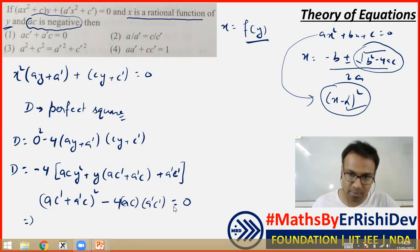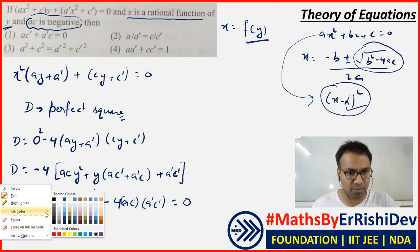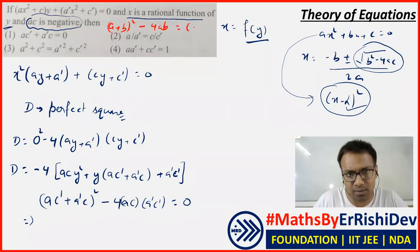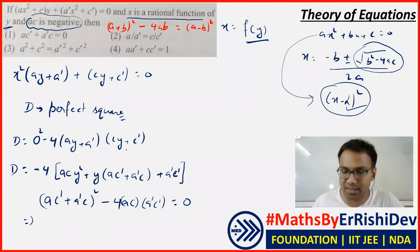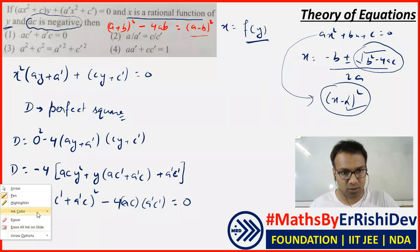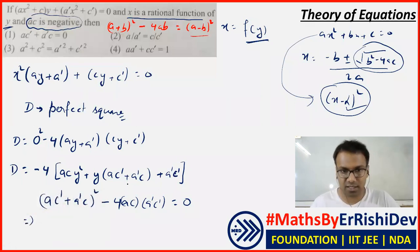Now expanding: (ac' + a'c)² - 4·ac·a'c'. I'll highlight this — whenever you have (a + b)² minus 4ab, this equals (a - b)². Because (a+b)² = a² + 2ab + b², and subtracting 4ab gives a² - 2ab + b² = (a-b)². I hope you know this; if not, please take note of it.